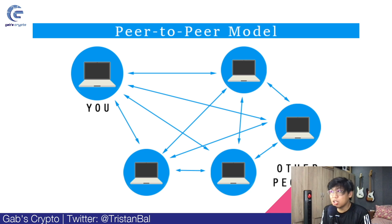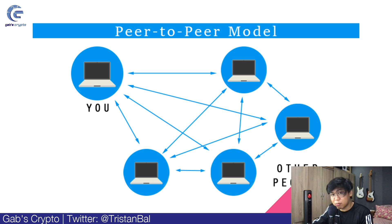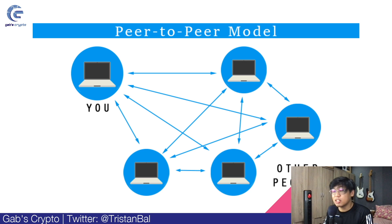Since Bitcoin is decentralized, it's actually a peer-to-peer model. Meaning, you can send it directly from one person to another without any financial institution or middleman like banks. So you can have Bitcoin and send it directly to a specific person — like a merchant — without going through a bank. That's basically cryptocurrency: decentralized, unlike fiat currency which is centralized with a financial institution.